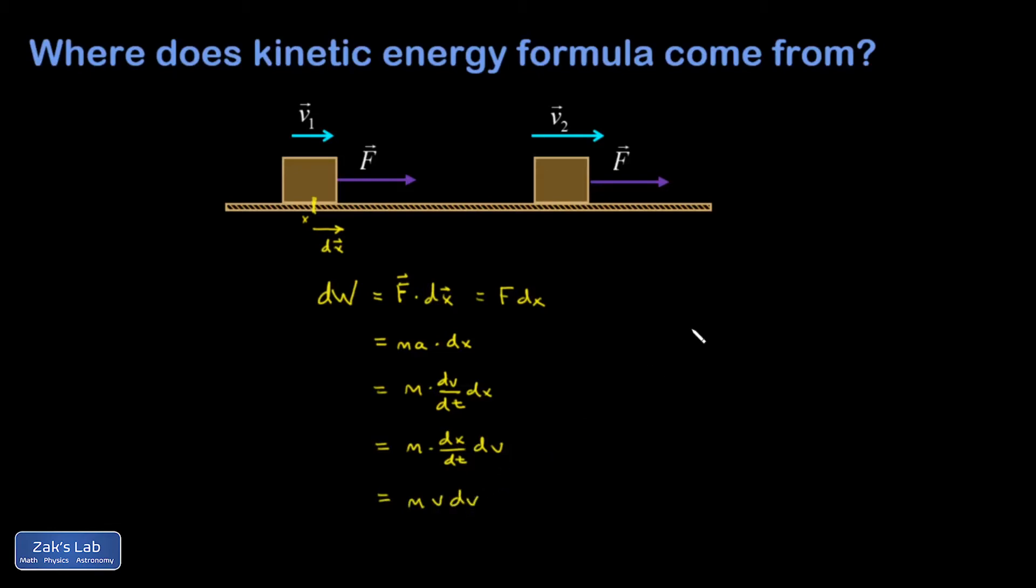So I have this new expression for the increment of work that's been done, mv dv. That's entirely phrased in terms of one variable v.